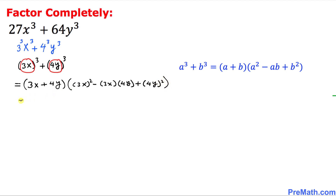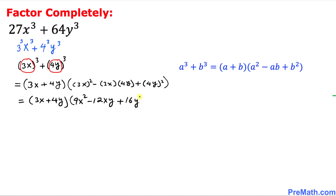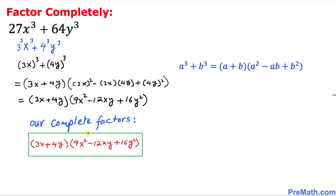Let's simplify furthermore. So (3x + 4y) times: (3x)² becomes 9x², minus 3x × 4y becomes -12xy, plus (4y)² becomes 16y². So these are our complete factors and that is our answer.